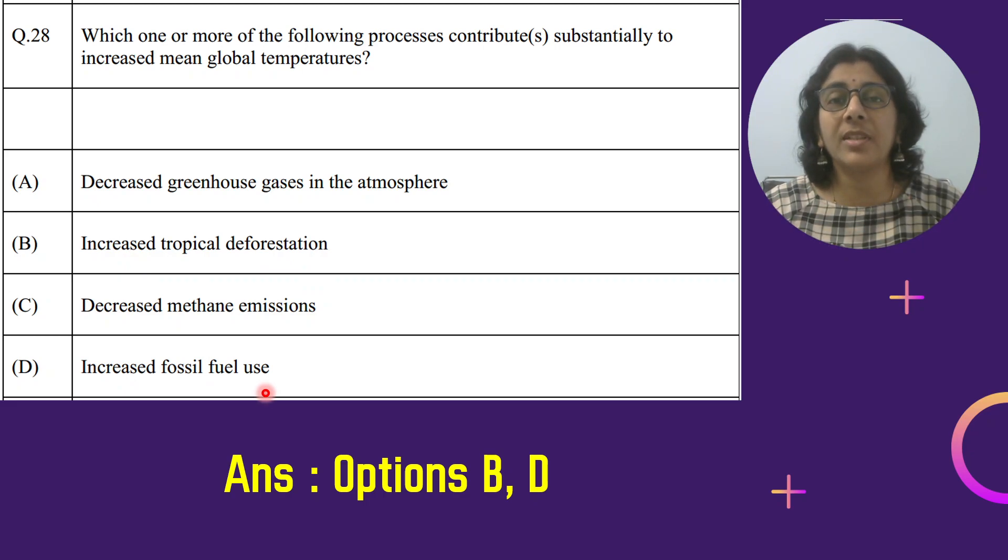Ab iski wajah se kya ho raha hai - greenhouse gases ka concentration badh raha hai. Or jitni heat yaha par chahiye, usse zyada heat yaha par trap ki ja rahi hai. That is what global warming. Samajh rahe ho? Is wajah se earth ka temperature normal se zyada badh dikha raha hai.